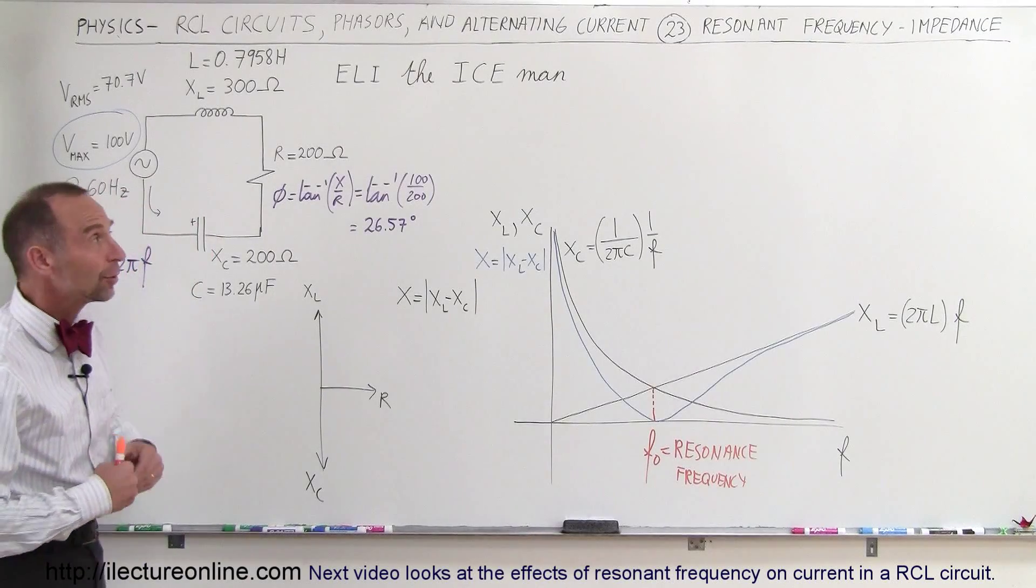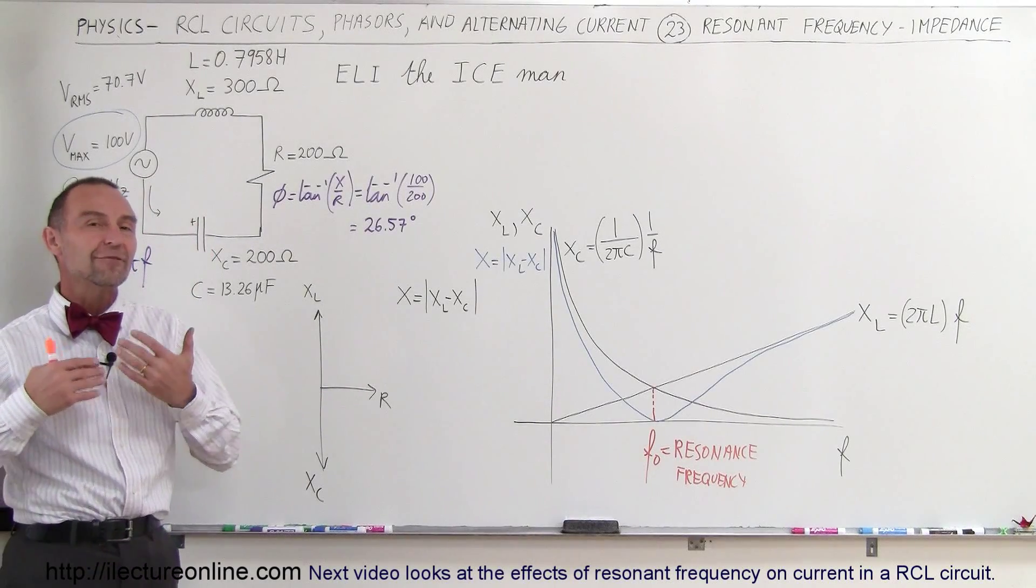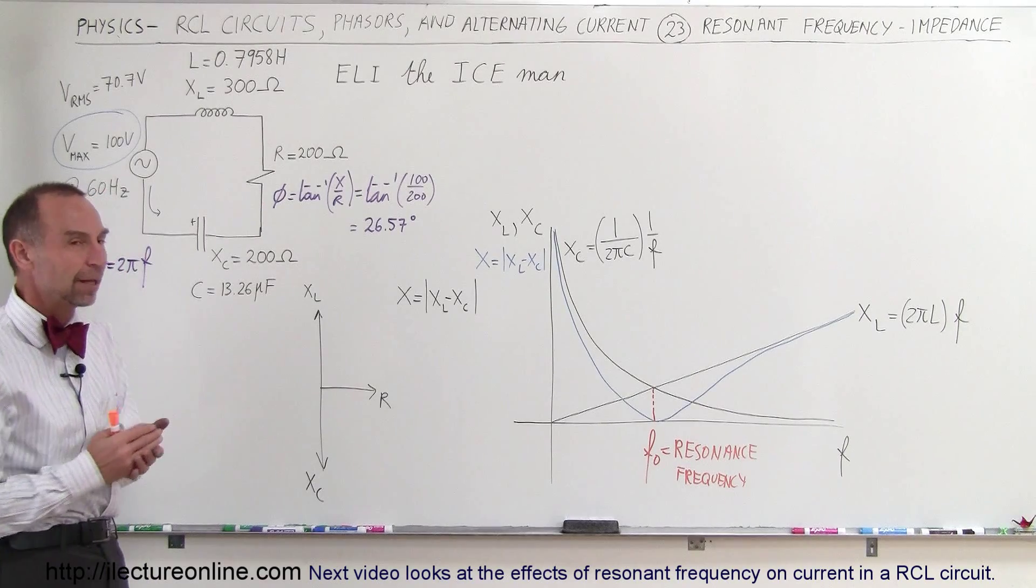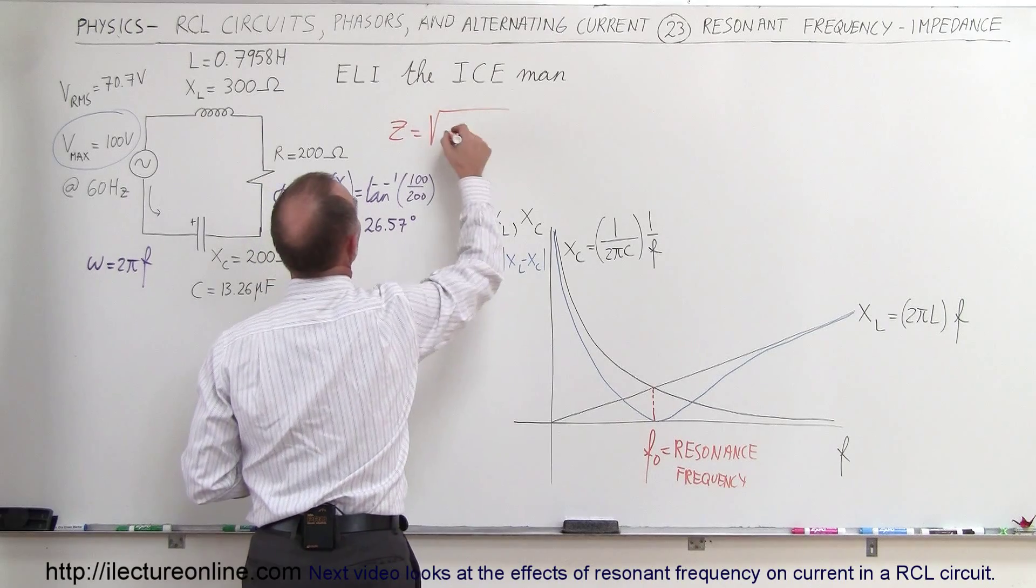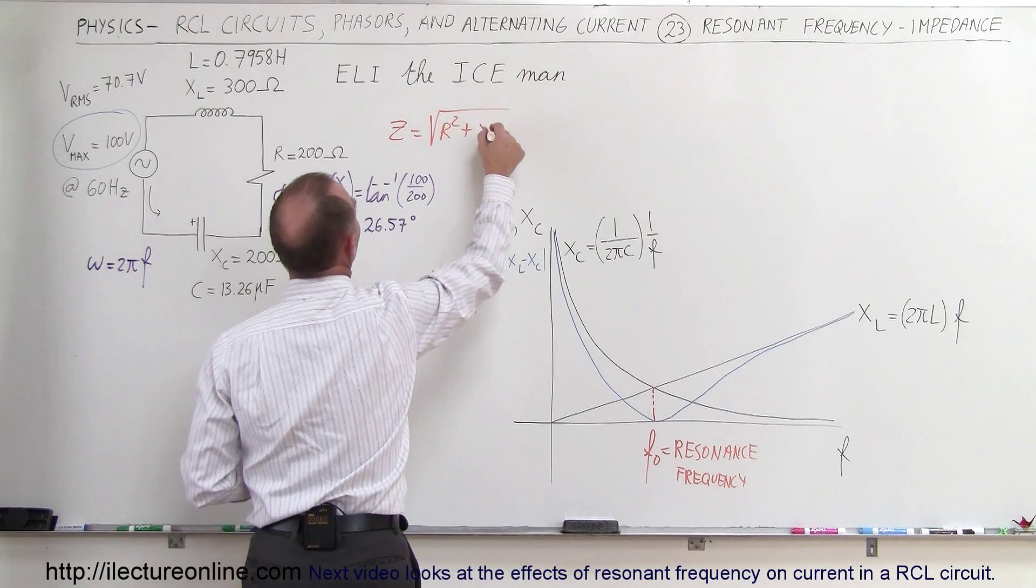Welcome to Electronline and now we're going to see how resonance frequency affects the impedance of the circuit. Now remember the impedance, z, is equal to the square root of r squared plus x squared.